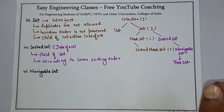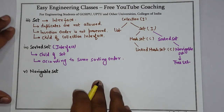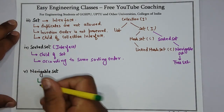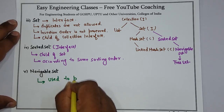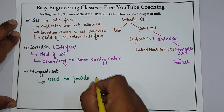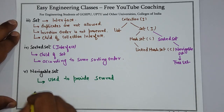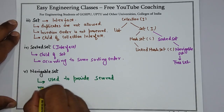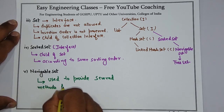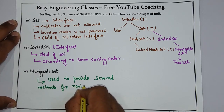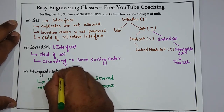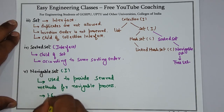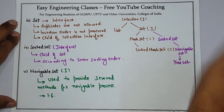NavigableSet is a child of SortedSet and is basically used to provide several methods for navigation purposes. It is also an interface and was introduced in Java version 1.6. NavigableSet is a child of SortedSet.